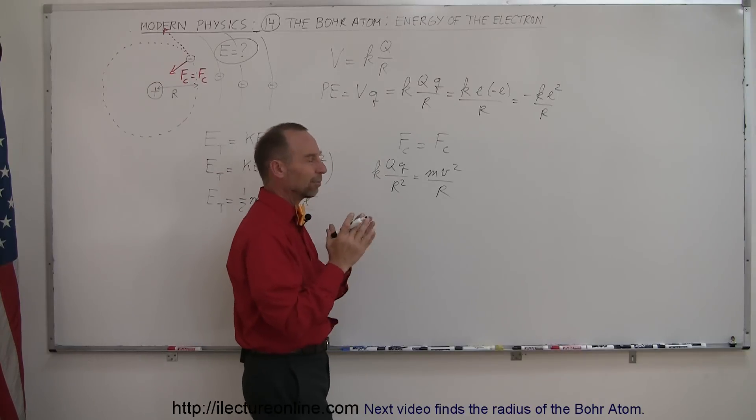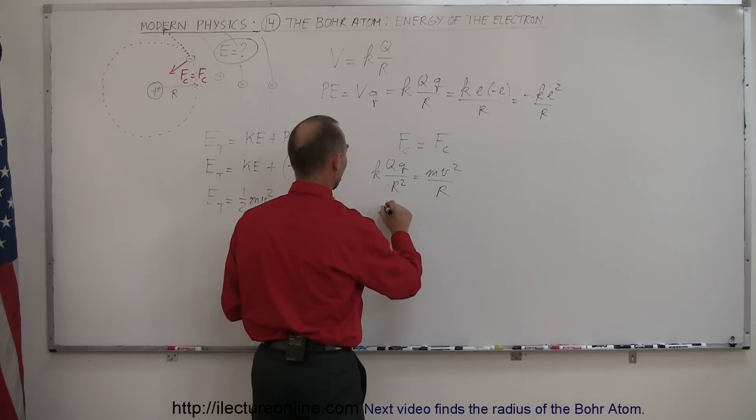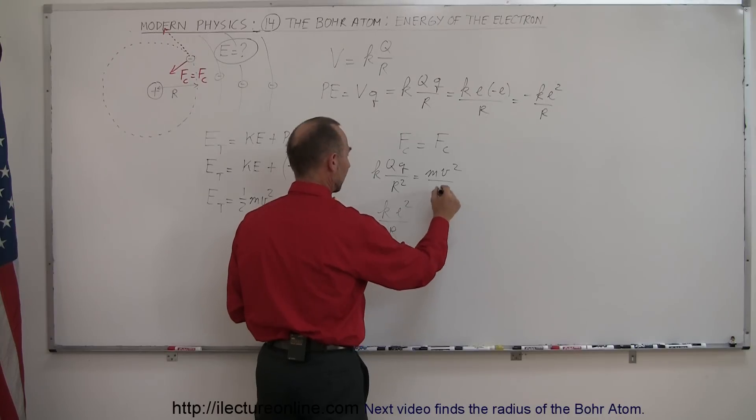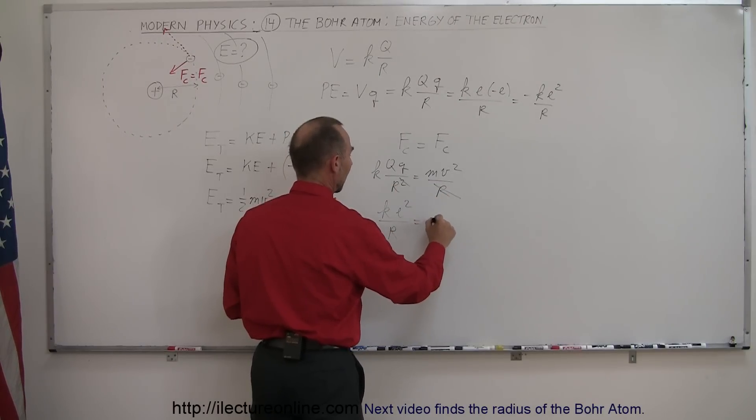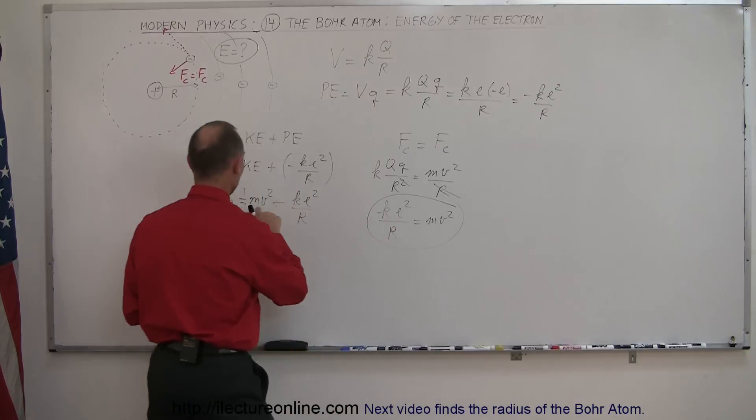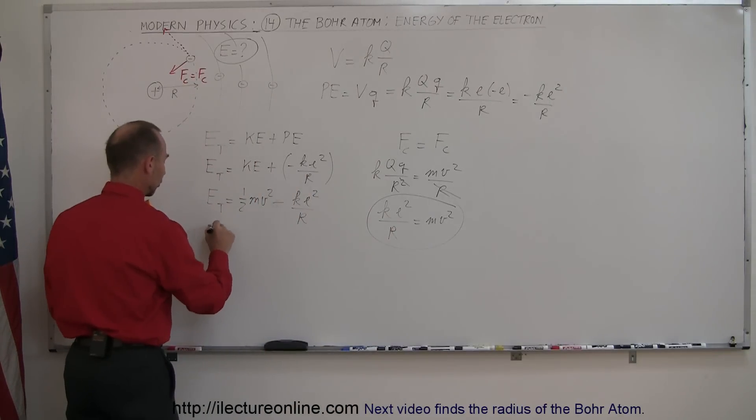So we have K times e² divided by R. Notice that this R cancels out that R so I only have one R, and that equals Mv². Which means I can substitute this in for Mv² over here.